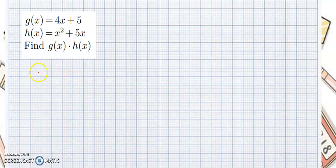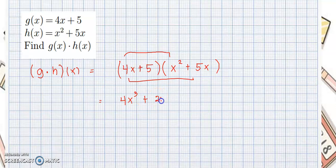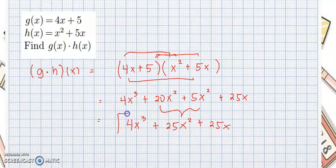Next example: we wanted to know the value of g times h of x. So this would be 4x plus 5, multiplied by x squared plus 5x. We will use the FOIL method. The first term is 4x cubed, the outside term is positive 20x squared, the inside term is positive 5x squared, and the last term is positive 25x. Combining similar terms: 4x cubed plus 25x squared plus 25x. So here is the answer.